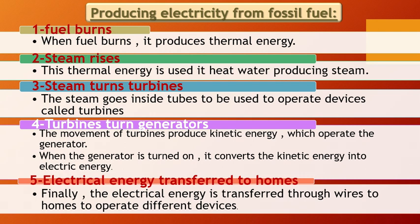Producing electricity from fossil fuel in the electric power station: step one, we burn the fuel. When we burn coal, it produces thermal energy. The thermal energy is used to boil the water. When the water boils, it produces steam or water vapor. The steam goes to the turbine.